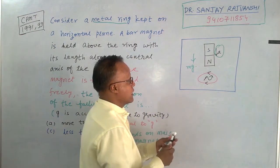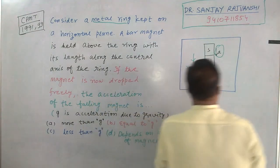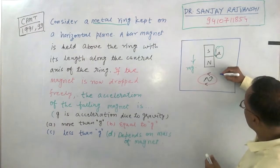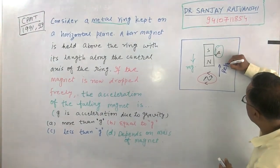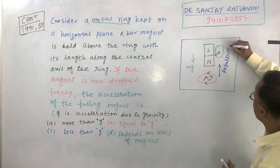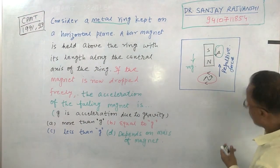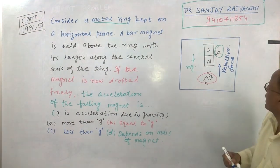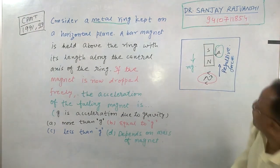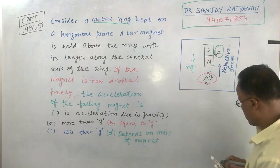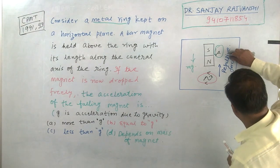The force between the magnet and the ring is repulsive in nature, meaning this repulsive force acts in the upward direction on the falling magnet.